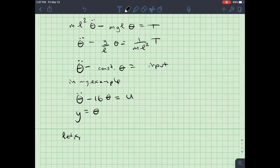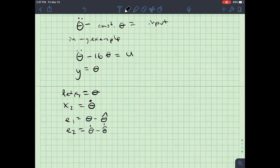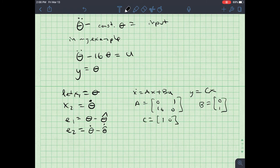And so what I'm going to do is this, I'm going to let X one be theta. I'm going to let X two be theta dot. And so my error, call it E one is equal to theta minus theta hat. And my error two is equal to theta dot minus theta hat dot. So the result of this, and I'll write it over on the right hand side here, is that if I have X dot equals A X plus B U and Y is equal to C X, that A is 0, 1, 16, 0, B equals 0, 1, and C equals 1, 0.